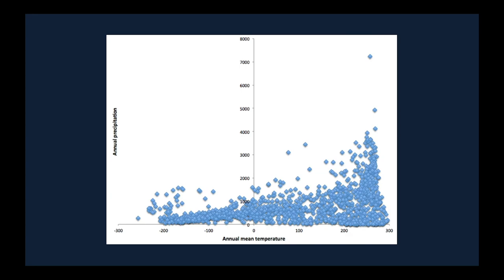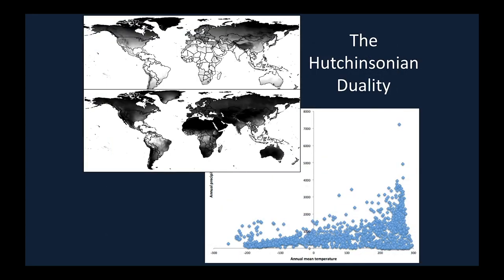Jorge Soberon told you about the Hutchinsonian duality: the idea that our species, wherever it's distributed, is distributed simultaneously in geographic space and in environmental space. We have to remember that duality always, or we will make dumb mistakes.